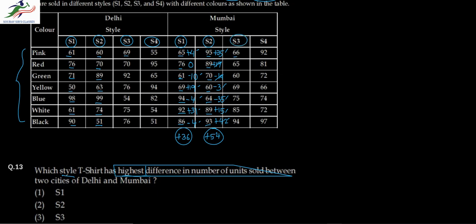For S3: 66 minus 69 is -3, 65 minus 70 is -5, 60 minus 92 is -32, 69 minus 76 is -7, 75 minus 54 is +21, 85 minus 75 is +10, 94 minus 76 is +18. Adding up: 18 plus 10 is 28, plus 21 is 49, minus 7 is 42, minus 32 is 10, minus 5 minus 3 gives +2. So S3 difference is +2.